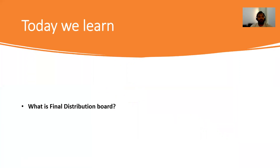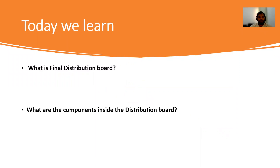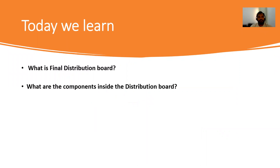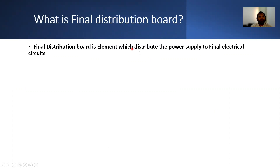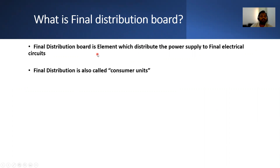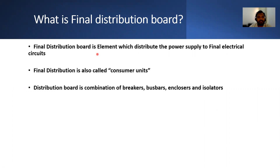In this video we are learning about what final distribution boards are, what components are inside them, and how to calculate for them. A final distribution board is an element which distributes the power supply to final electrical circuits. It is also called a consumer unit — a combination of breakers, bus bars, enclosures, and isolators.